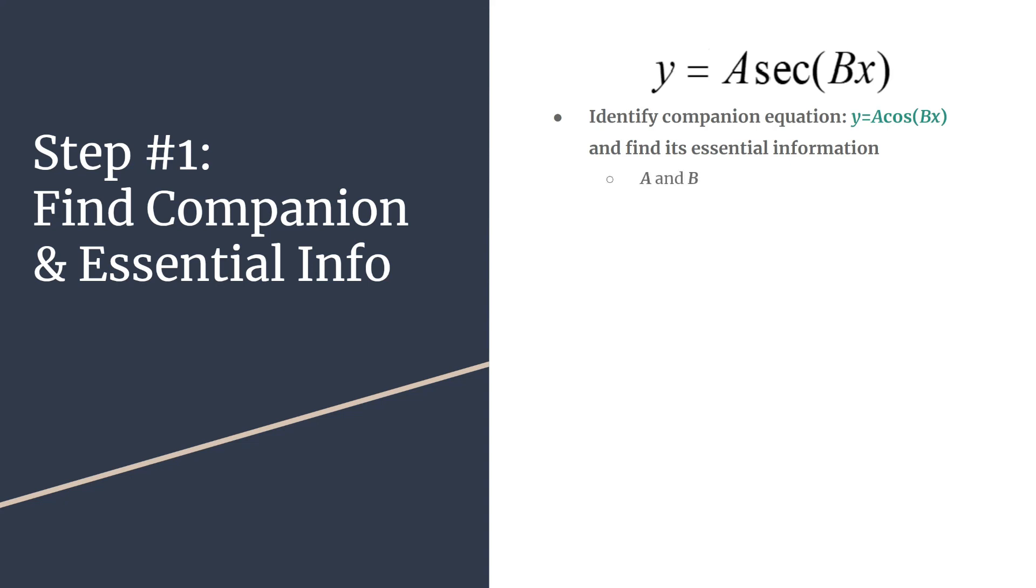So the essential information you'll find, you'll easily identify A and B. The absolute value of A will be the amplitude of that companion equation, cosine. B will tell you how many cycles you have between zero and two pi. You'll be able to find the period, calculating it using two pi over B. So that's just the length of a horizontal cycle.